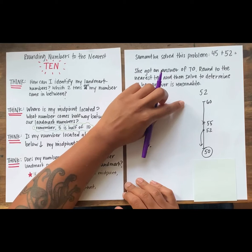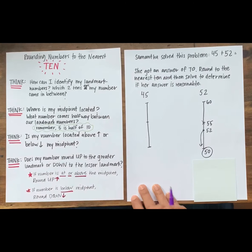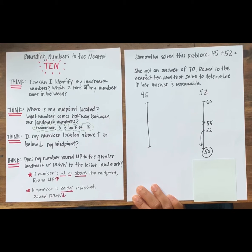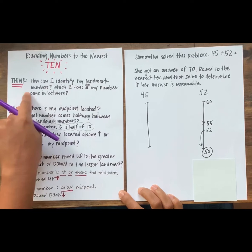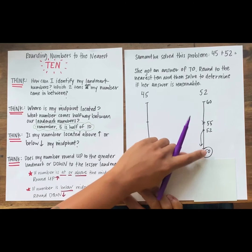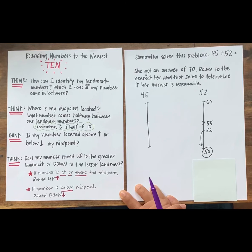Let's take a look at a student's work when they rounded the number 52. What did this student think about and what did they do to round 52? Say your answer out loud. Yes, that's right. They started by thinking, which two tens, which landmark numbers, is my number in between? How do they determine 50 and 60 as our landmark numbers? Say it out loud.